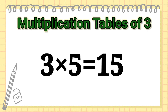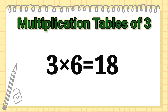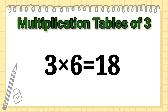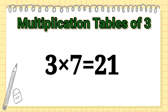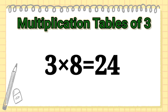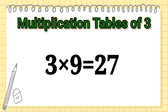3 5's are 15, 3 6's are 18, 3 7's are 21, 3 8's are 24, 3 9's are 27.